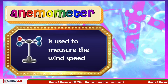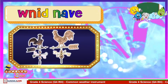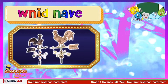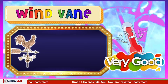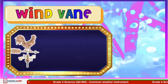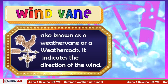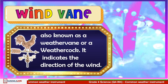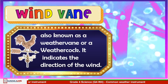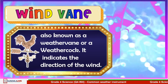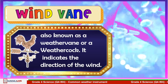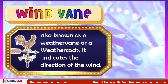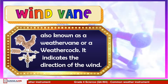Let's move to the fourth weather instrument. If your answer is wind vane, you are correct! Wind vane, also known as the weather vane or weather cock, indicates the direction of the wind. They are typically found on top of a building. A weather vane usually resembles an arrow shape with letters indicating north, south, east, and west. The arrow rotates freely as a result of the wind and points in the direction the wind is coming from.